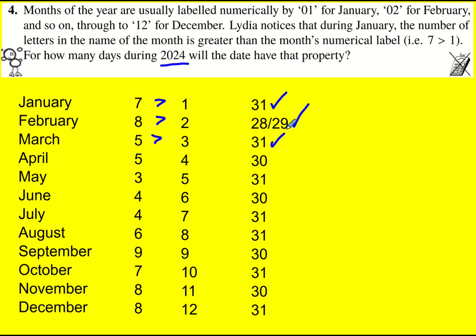March: we're sorted as well. And April: just about. But actually that is it from then on — September is equal but not greater than. So it's going to be these four months and we can quickly add them up.